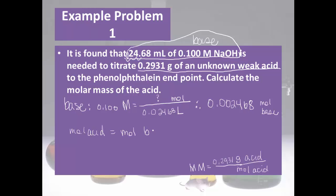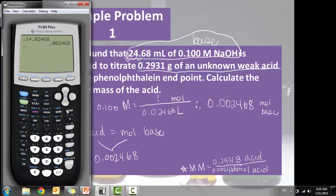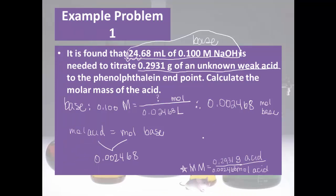Since moles of acid equals moles of base, moles of acid is also 0.002468. Plugging into our molar mass formula: 0.2931 grams divided by 0.002468 moles gives 118.7. Looking at significant figures — three sig figs because of the 0.100 molarity — we round to 119 grams per mole. That's the molar mass of our unknown acid.